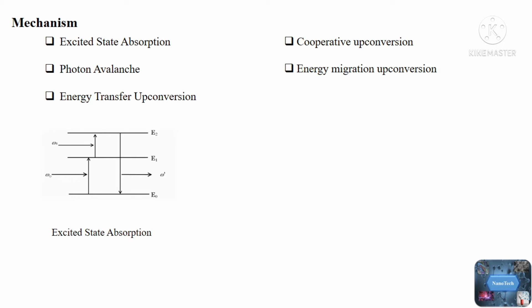Photon avalanche. This is a more complicated process with three separate non-linear behaviors: transmission, emission, and rising time on the pump power intensity, with the presence of a crucial pump threshold in most cases. This process includes resonant excited state absorption, efficient cross relaxation, and substantial reservoir-level population, which results in strong upconversion emission.